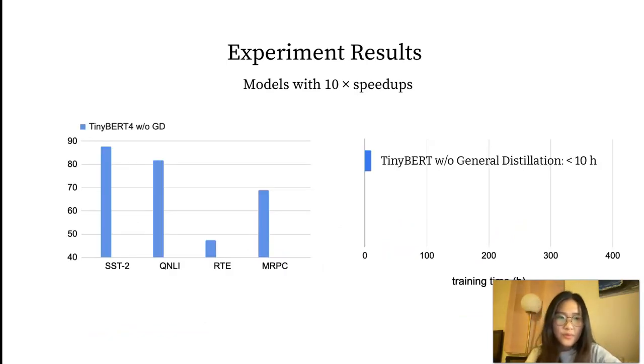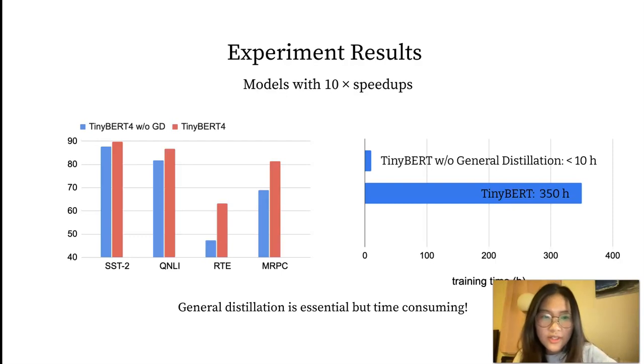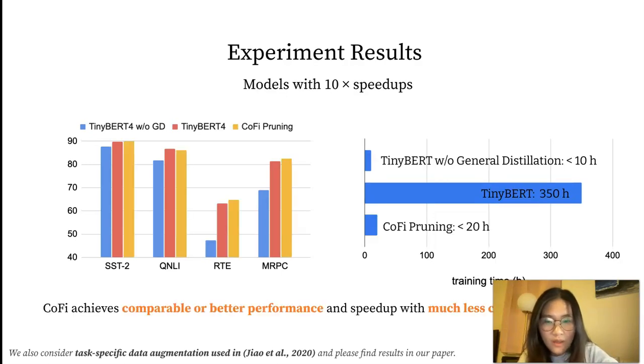We first show the TinyBERT results without general distillation, which takes less than 10 hours to train. General distillation largely improves the performance, especially on small datasets like RTE and MRPC, but it's computationally intensive, which takes up to 350 hours to train. CoFi instead achieves comparable or even better performance and speed-up, with much less computational time.